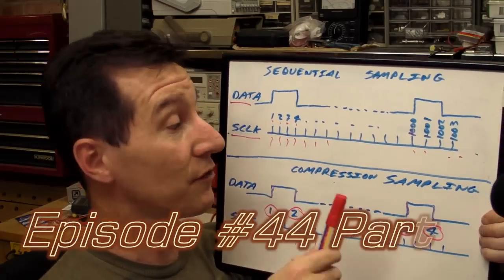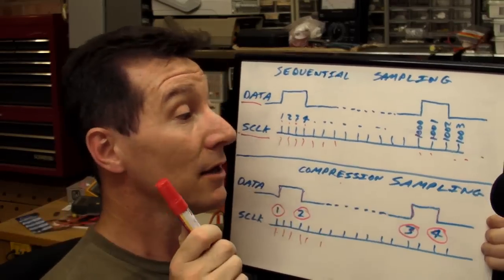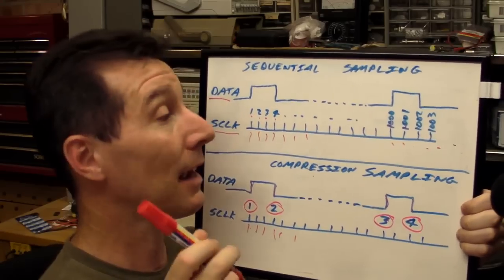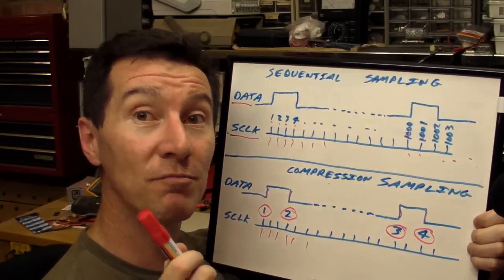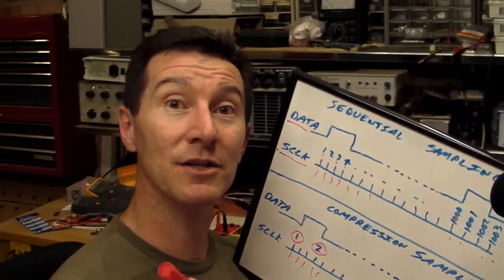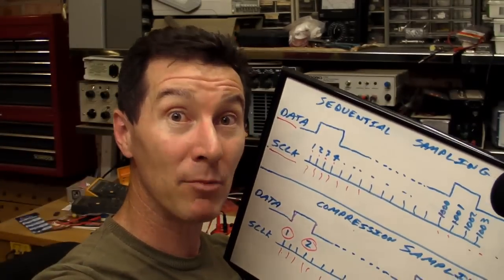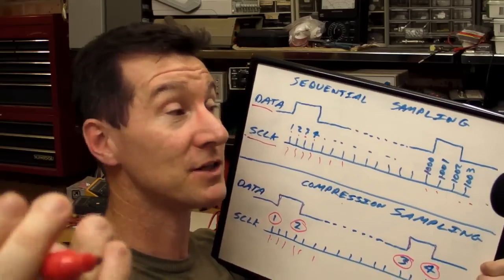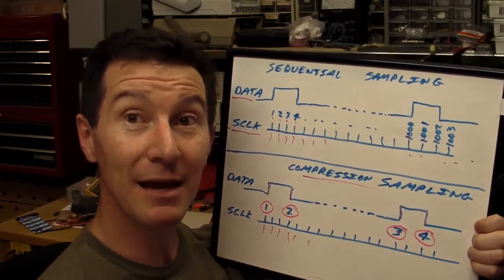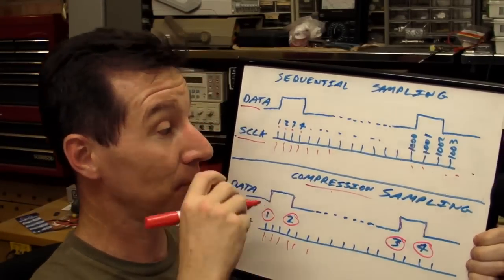A logic analyzer with compression sampling is extremely valuable — it maximizes your use of memory. The best oscilloscope will have an incredibly deep memory, megabytes of memory, with a compression sampling system. That is the best scope you will get.